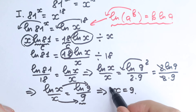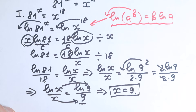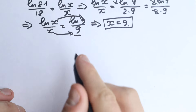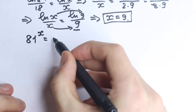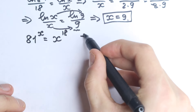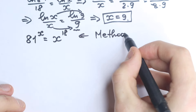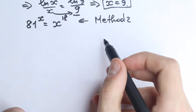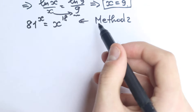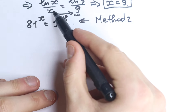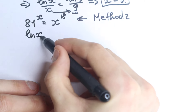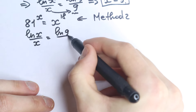That was our first method. Now I want to show you the second way to solve it, which is a completely different approach. Our question again: 81^x = x^18. The second method involves the Lambert W function, which is really great to practice and learn about. Starting from where we left off, we need the expression: natural log x over x equals natural log 9 over 9.